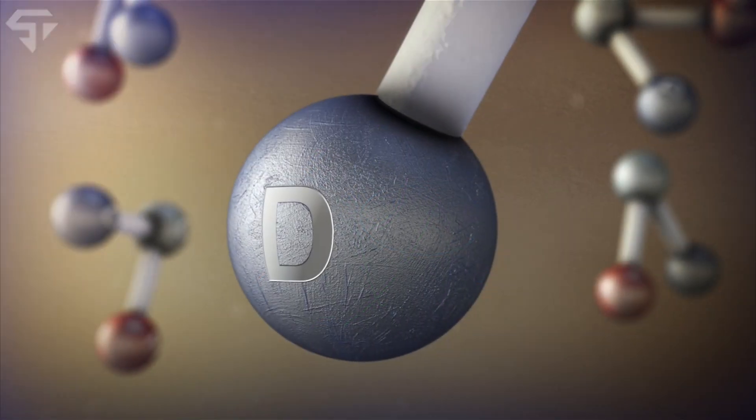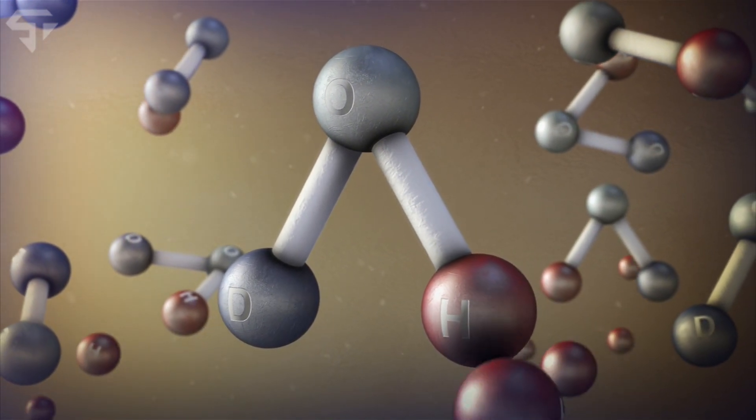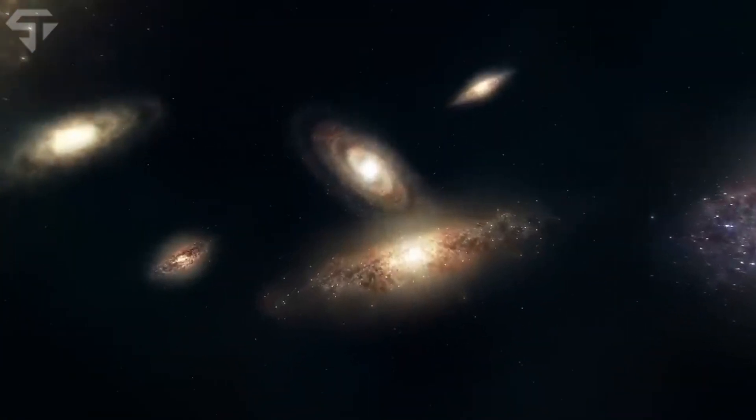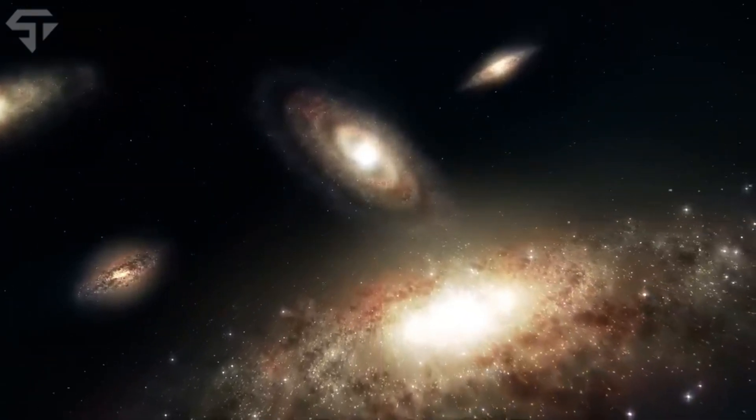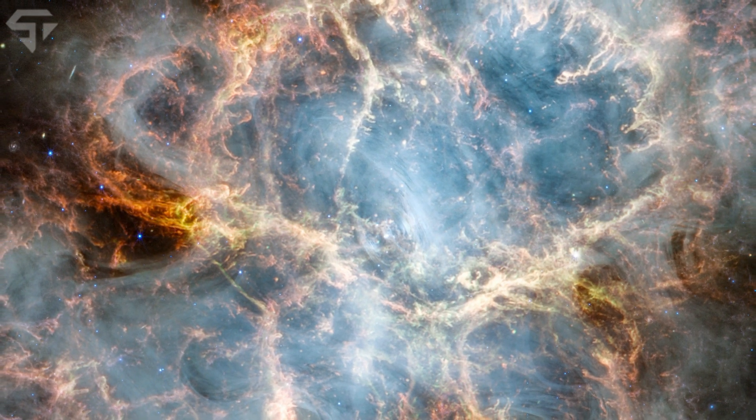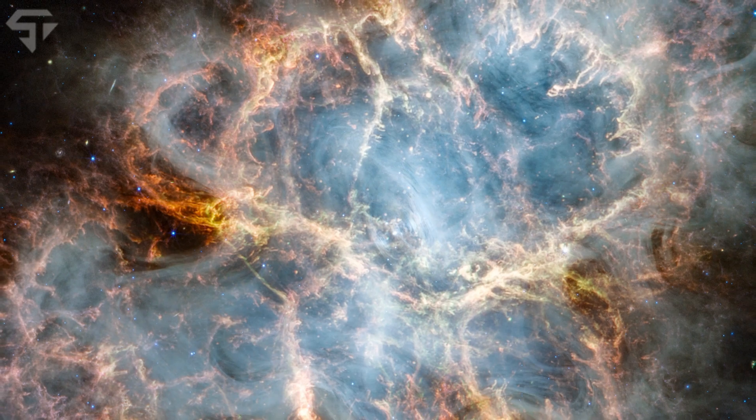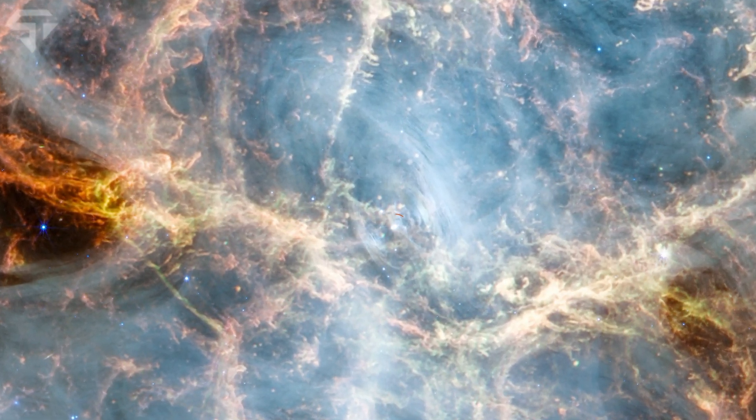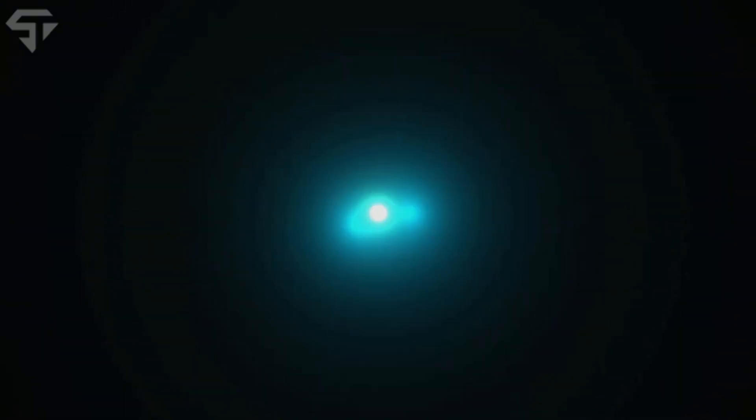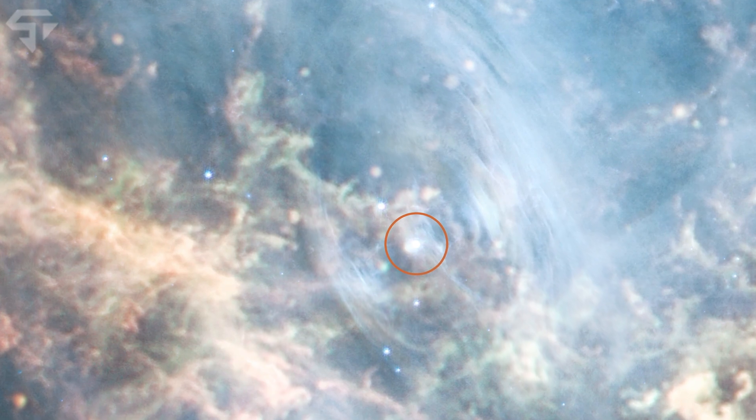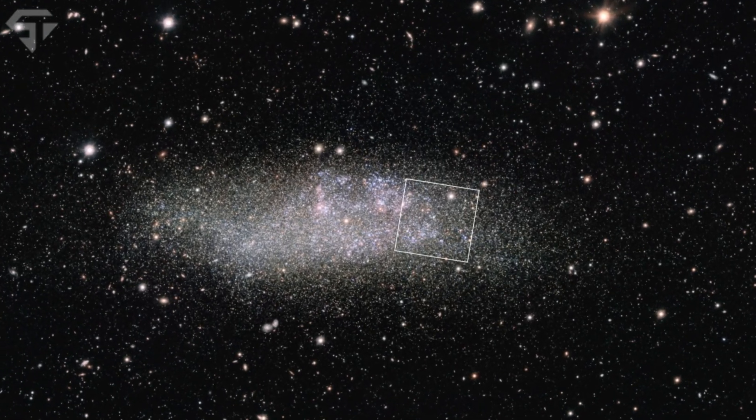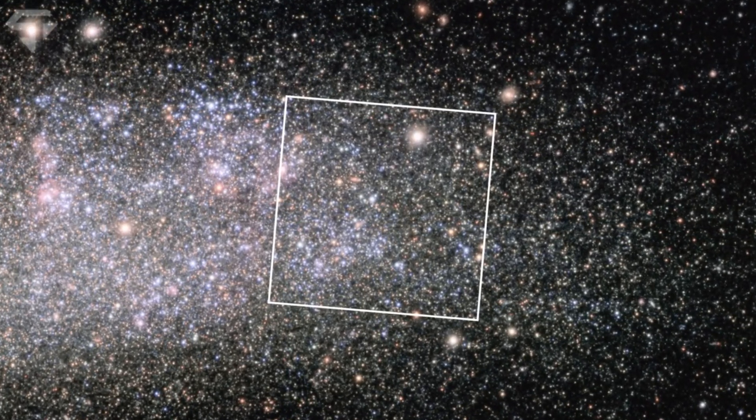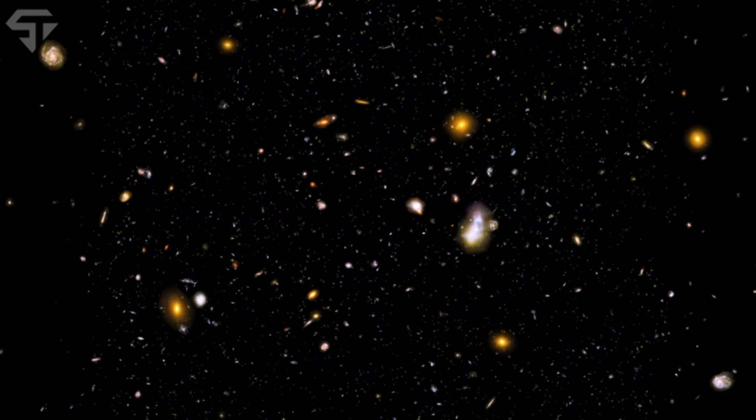These particles were the tiny building blocks that would eventually come together to form atoms, stars, and galaxies. This process marks the transition from a universe dominated by radiation to one where matter began to emerge. At this point, the universe was a soup of particles, where the fundamental forces—gravity, electromagnetic, and the strong and weak nuclear forces—began to emerge. As the universe cooled further, these particles began bonding together, forming the first atoms, mostly hydrogen and helium, the lightest elements in the universe. This process is known as recombination and occurred about 380,000 years after the Big Bang. The birth of atoms marked a key turning point in the evolution of the cosmos.